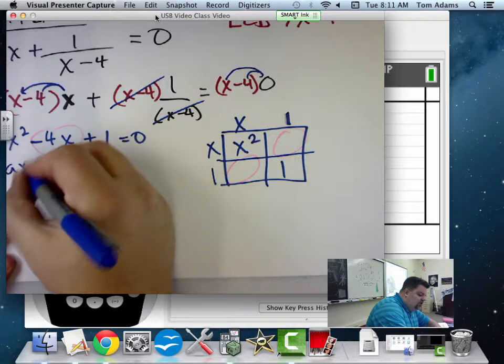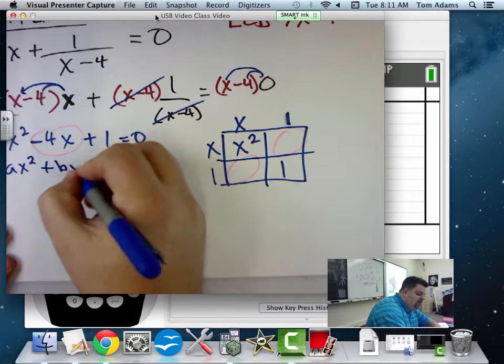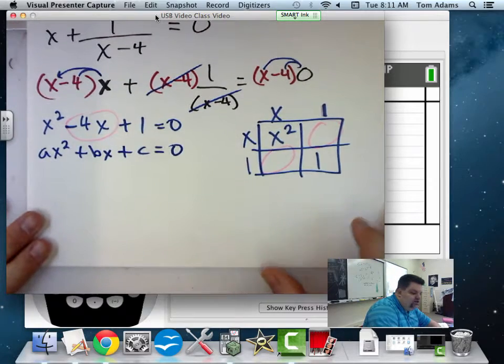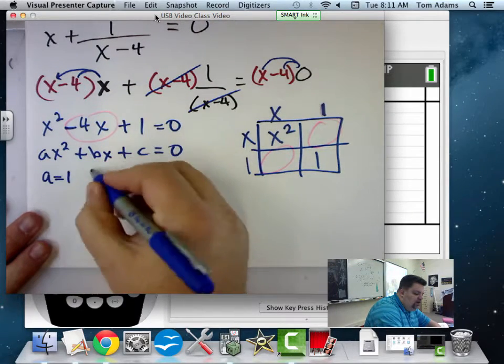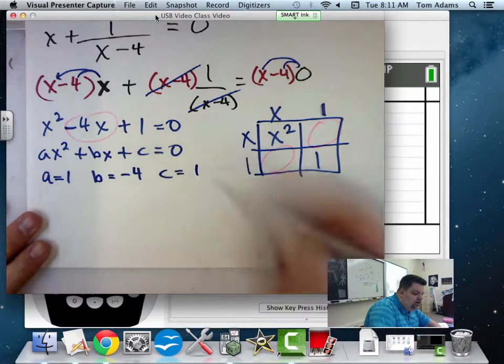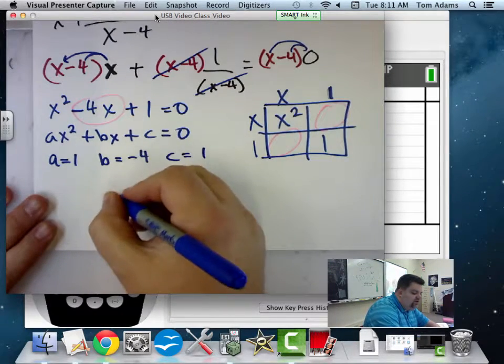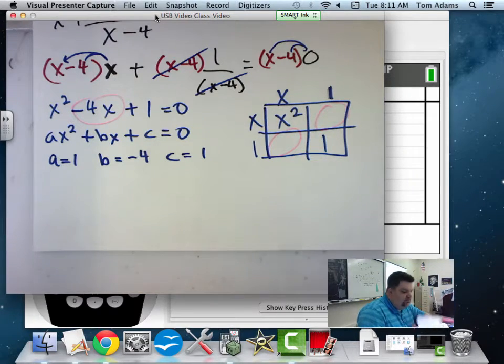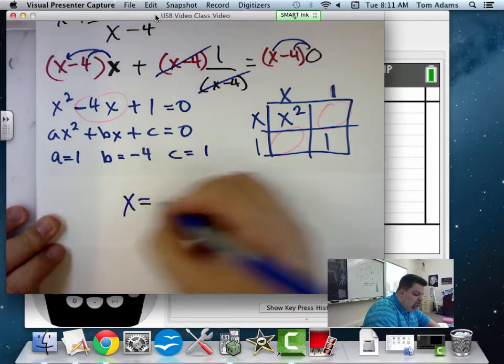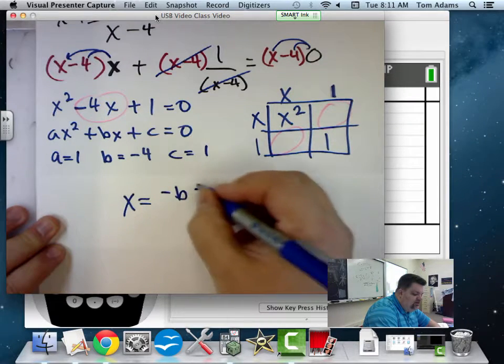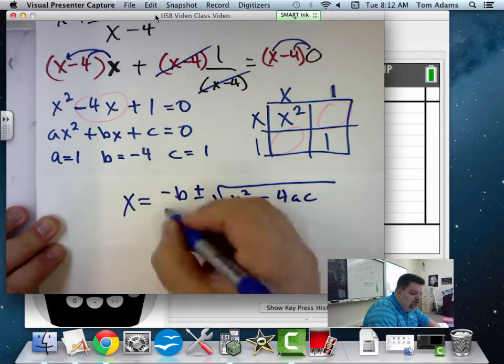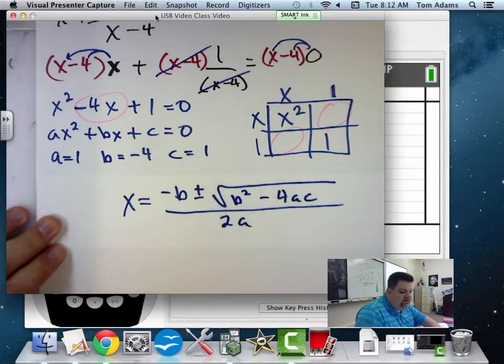So I see that this is written in the form ax squared plus bx plus c is equal to 0, right? Okay, so then what I have is a is equal to 1, b is equal to negative 4, and c is equal to 1. Now the quadratic formula states that if I take x is equal to negative b plus or minus the square root of b squared minus 4ac all over 2 times a. Is that correct?